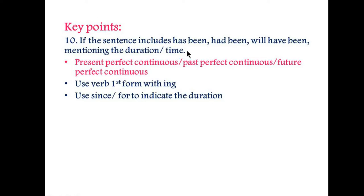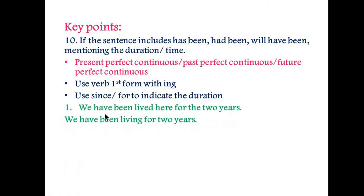Key point number ten: if the sentence includes 'has been', 'had been', or 'will have been' and mentions a duration or time, then this sentence is present perfect continuous, past perfect continuous, or future perfect continuous. You will use the verb first form with '-ing' and also use 'since' or 'for' to indicate the duration. For example, 'We have been lived here for two years' is incorrect.